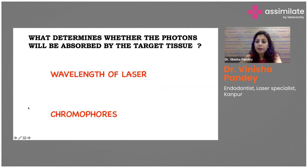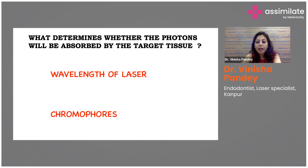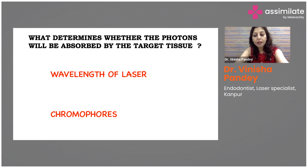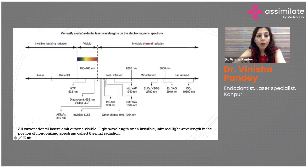What determines whether the photons will be absorbed by the target tissue? When your laser light — a beam of photons, the stream of photons emitted from the laser device — reaches the tissue, what determines that these photons will be absorbed? The laser light has to be absorbed to perform its duty. It can depend on the wavelength of the laser or its chromophores. There are two things on which the laser is highly dependent: the wavelength of the laser and the chromophore of the tissue.